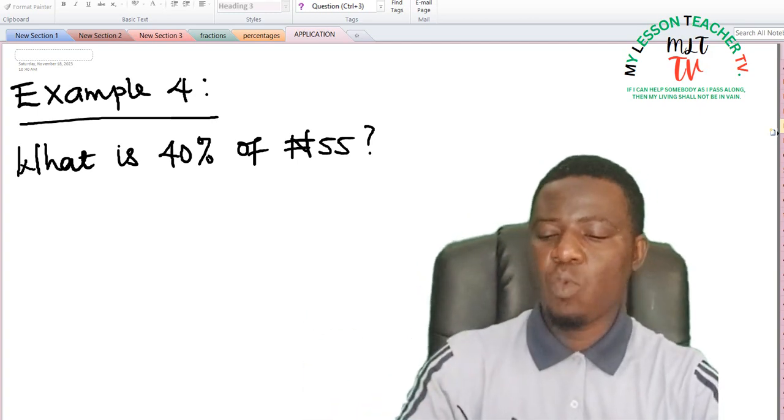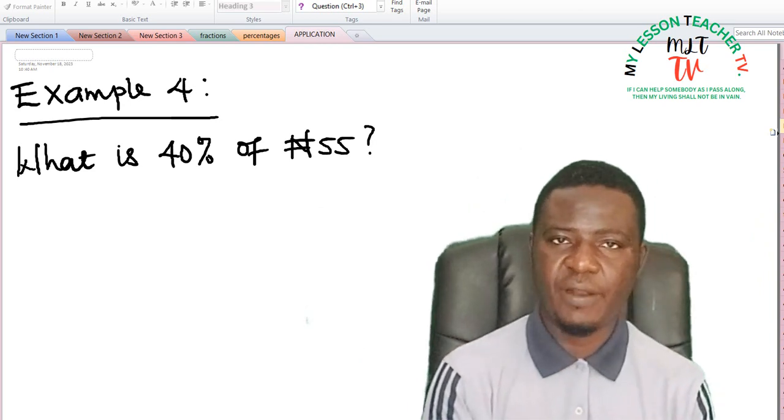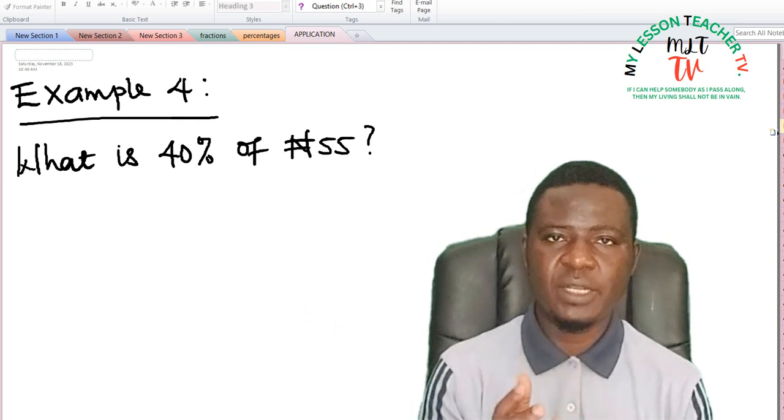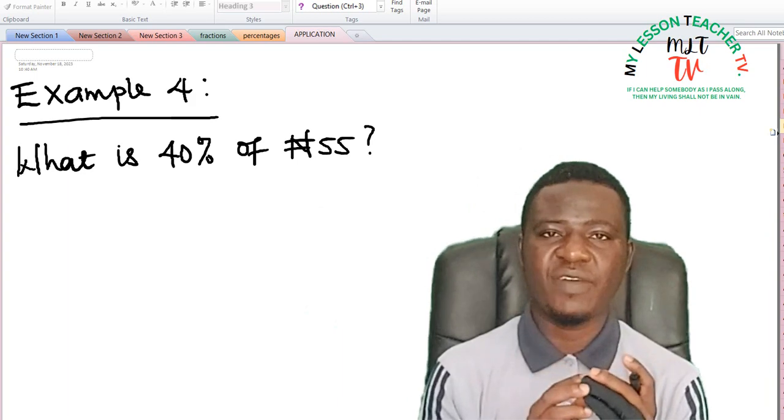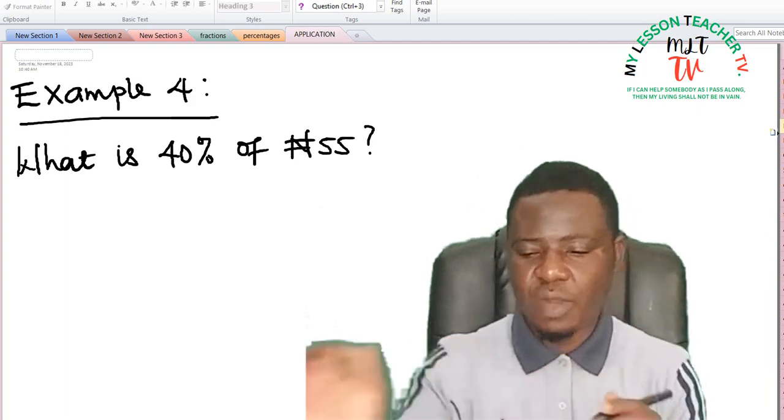Example 4 says, what is 40% of 55 Naira? 40% of 55 Naira, just like we said, express 40% as a fraction and then multiply it by 55 Naira.